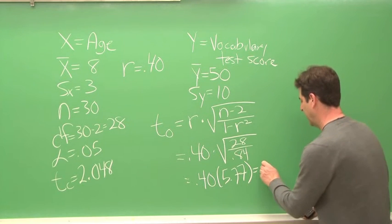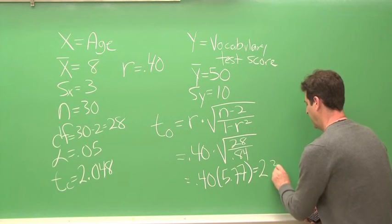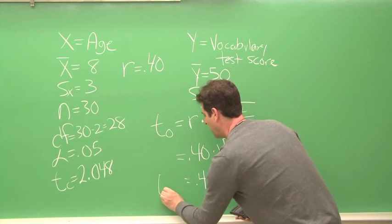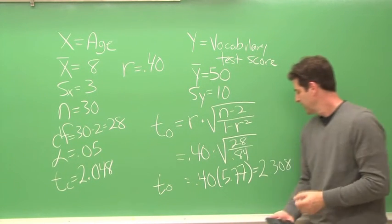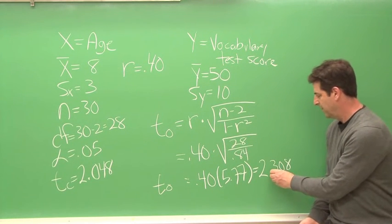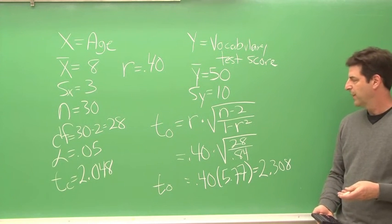Now we get 2.308. So that is our t-observed value, 2.308.